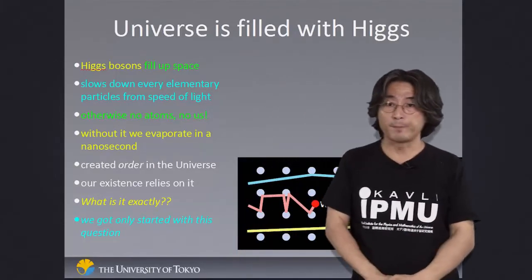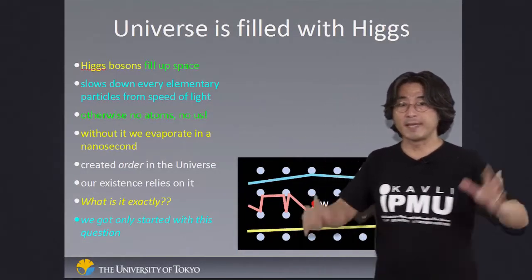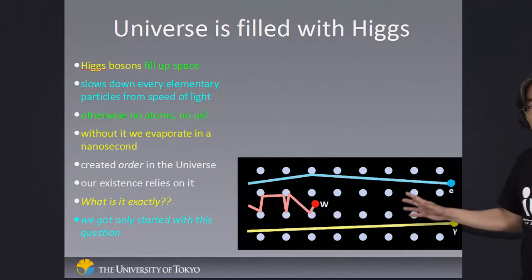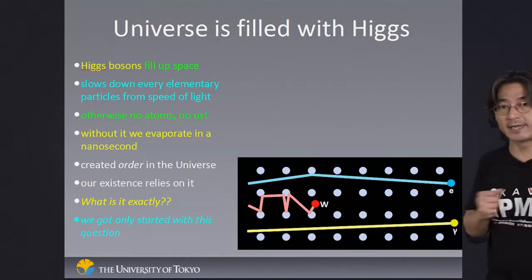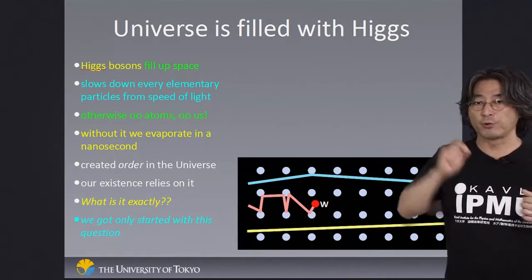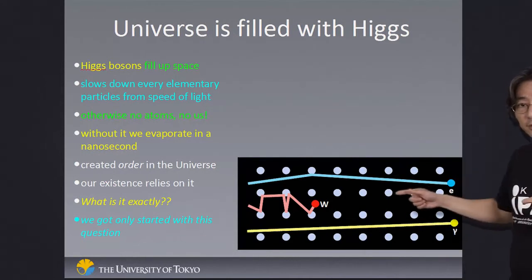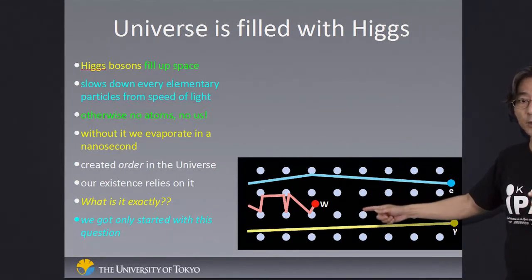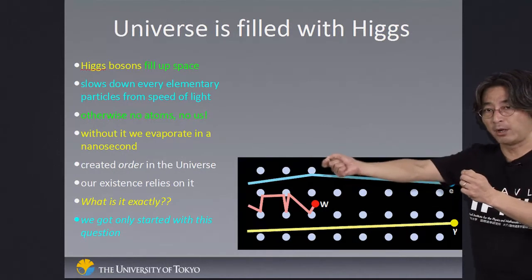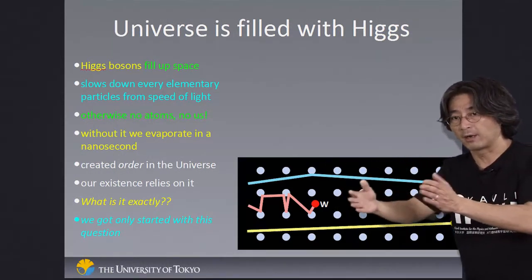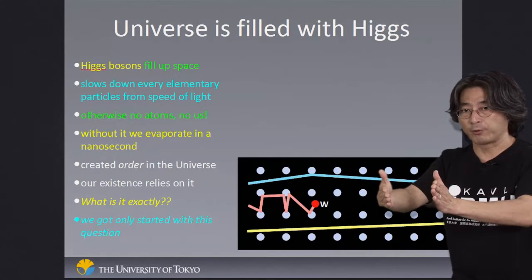The way we picture our universe today is as being filled with the Higgs boson — completely and as densely packed as possible. When the electron wants to go through this space, it gets bounced around and slowed down. Also, when the weak force wants to act on a distant body, it gets slowed down and doesn't go very far — and that's how it became a short-range force.